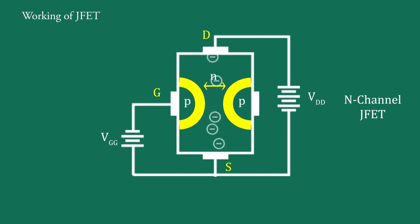On other hand, if the reverse voltage is decreased, the width of the depletion layers also decreases. Therefore, width of channel between the two layers is increased and hence, current from source to drain increases.